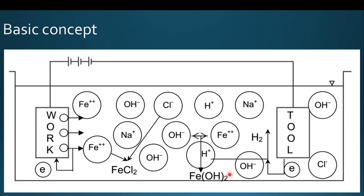In electrochemical grinding, the workpiece and tool are completely immersed in an electrolyte solution — for example, water mixed with sodium chloride (NaCl). The workpiece is connected to the positive terminal and the tool to the negative terminal of a low-voltage, high-current DC power supply.